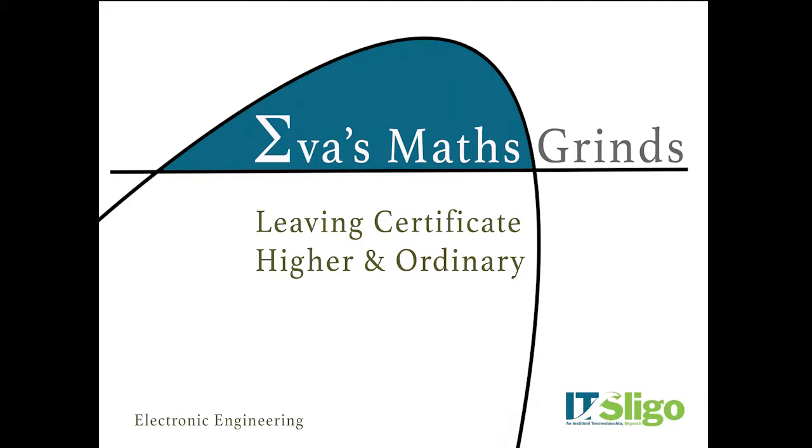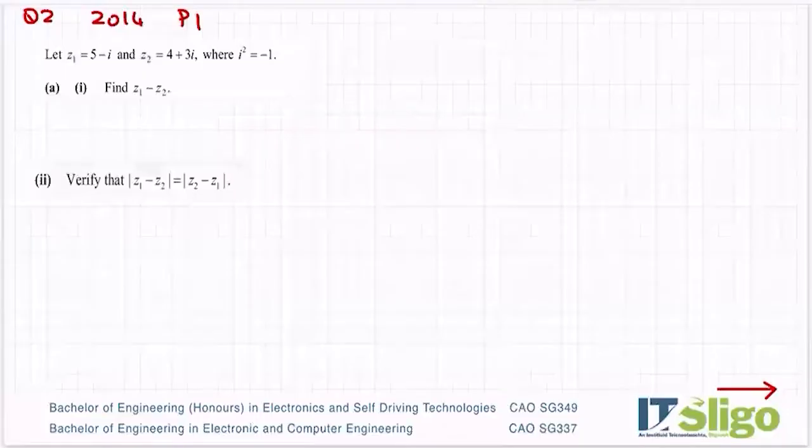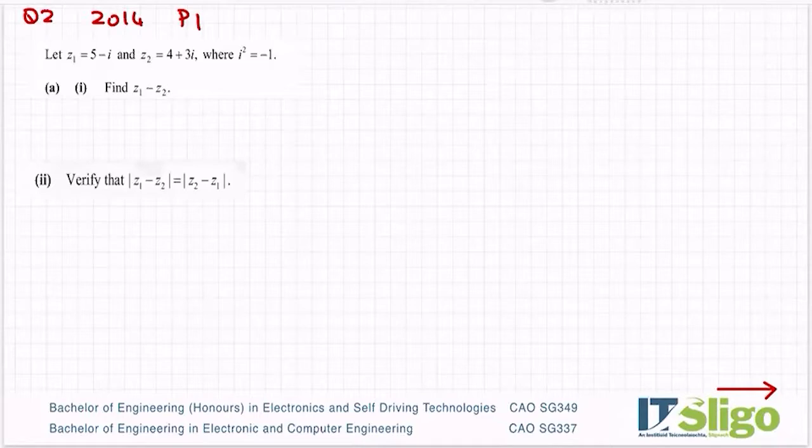Hi, I'm Eva Murphy from Electronic Engineering at IT Sligo and this is my Leaving Cert maths grinds channel. I'll regularly add new videos for both higher and ordinary level maths, so make sure you subscribe below and click the bell icon to be notified of new videos. Let's have a look at this one - Question 2, 2014 on complex numbers. So Z1 equals 5 minus i and Z2 equals 4 plus 3i, where i squared is minus 1.